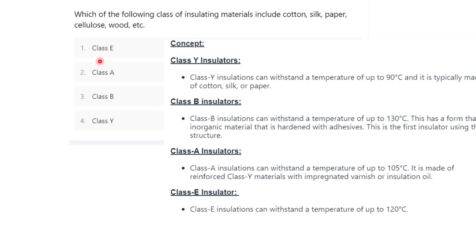Next question: which of the following classes of insulating materials includes cotton, silk, paper, and cellulose wood? Class Y insulators can withstand a temperature of about 90°C and are typically made up of cotton, silk, or paper — so the correct option is class Y. Class B insulators can withstand up to 130°C. Class A insulators can withstand about 105°C. Class C insulation can withstand about 120°C.